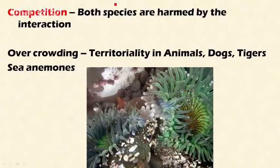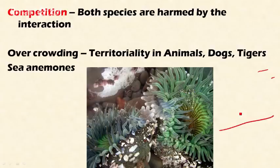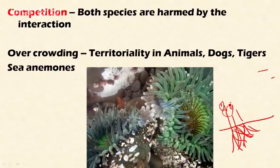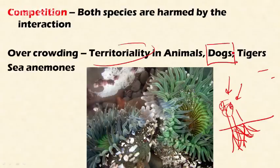The next concept is competition, where both species are harmed by the interaction. An example is overcrowding: if seeds are planted too closely, plants compete for nutrients, space, and light, and their overall growth is stunted. In animals, territoriality is maintained — for example, dogs maintain territories and compete with intruders. Tigers also maintain their own territories, which is why larger areas are needed for tiger conservation.